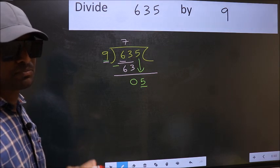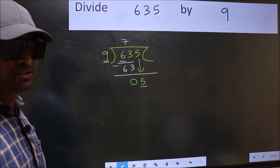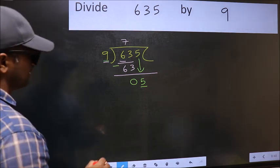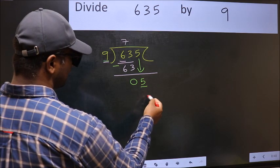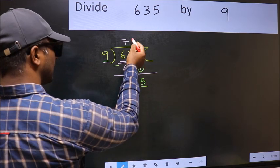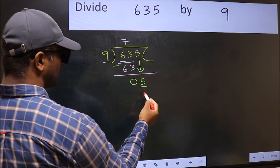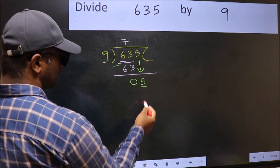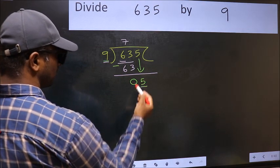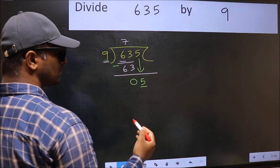Instead, what you should think about is which number should we take here? If I take 1, we will get 9, but 9 is larger than 5. So what we should do is take 0.